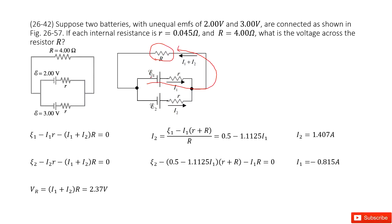As we can see, the EMF epsilon 1 increases the voltage, and the current goes through R, decreasing the voltage. So minus I1 times small r, minus (I1 plus I2) times capital R. This makes the voltage decrease equal to zero.